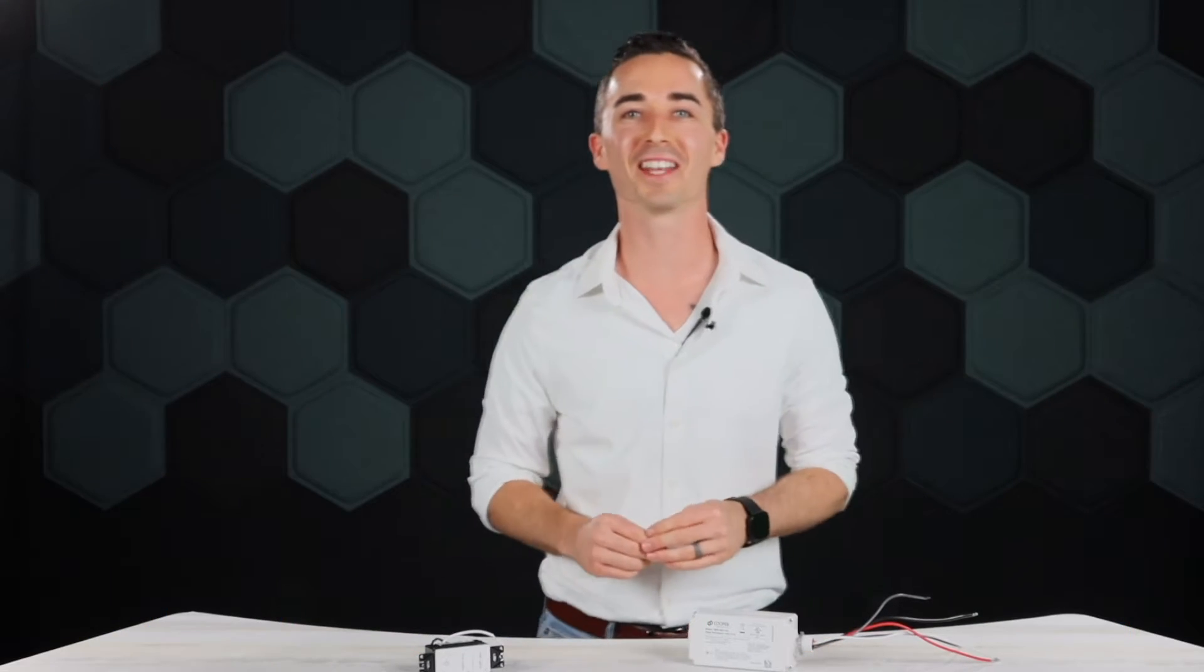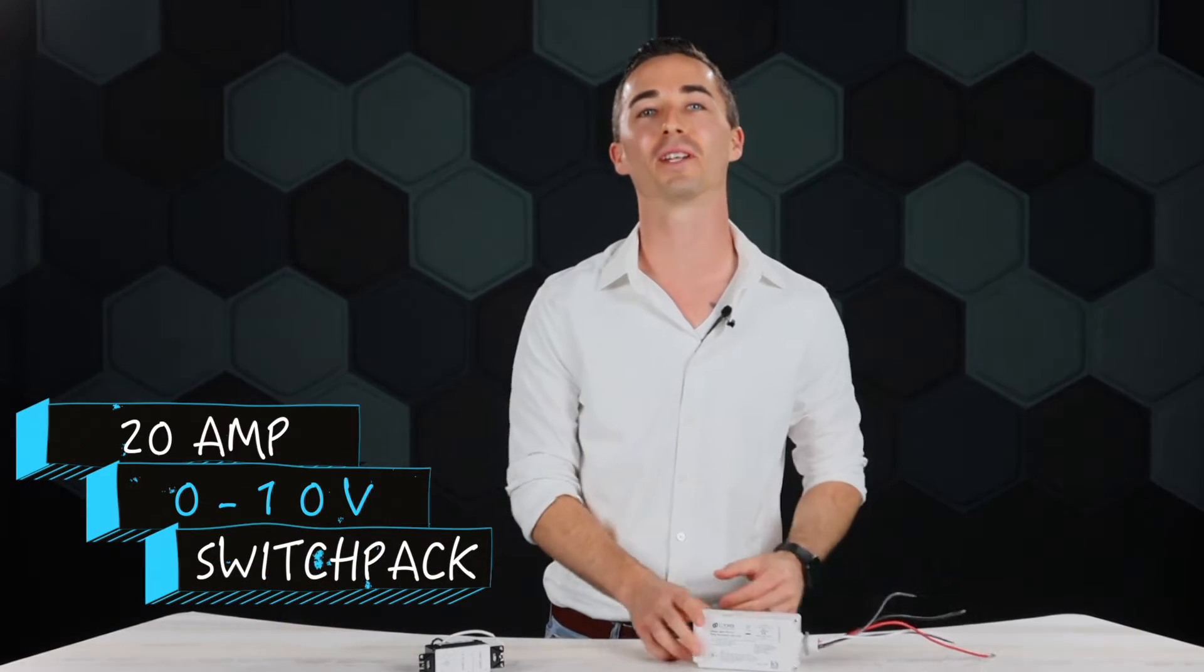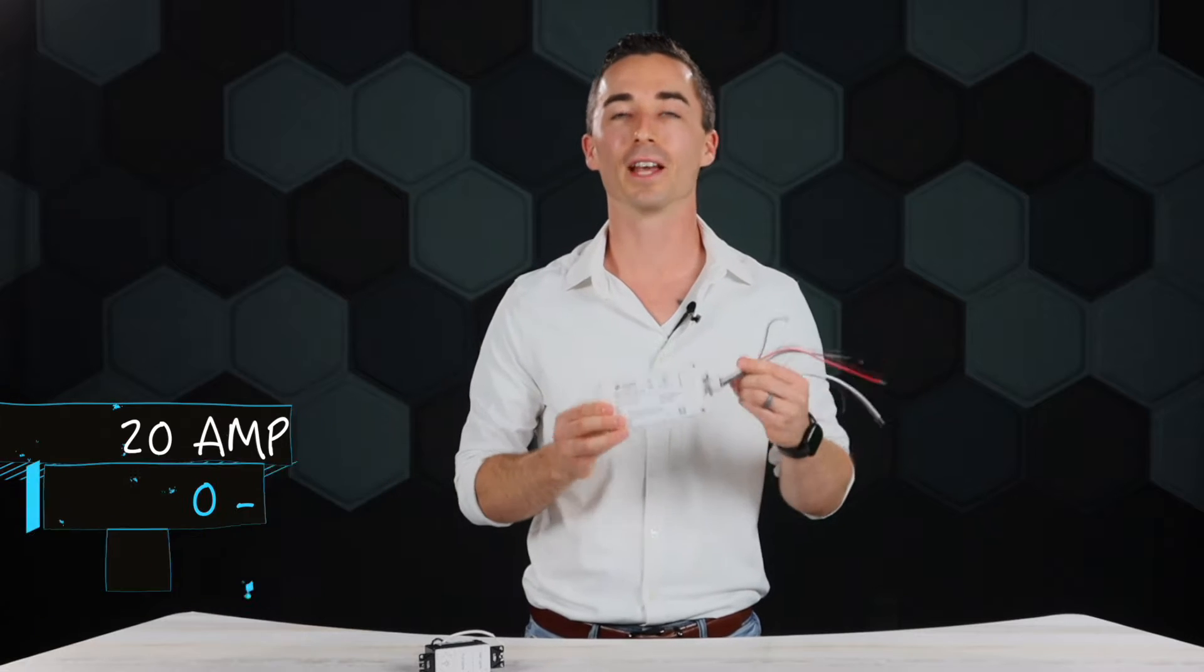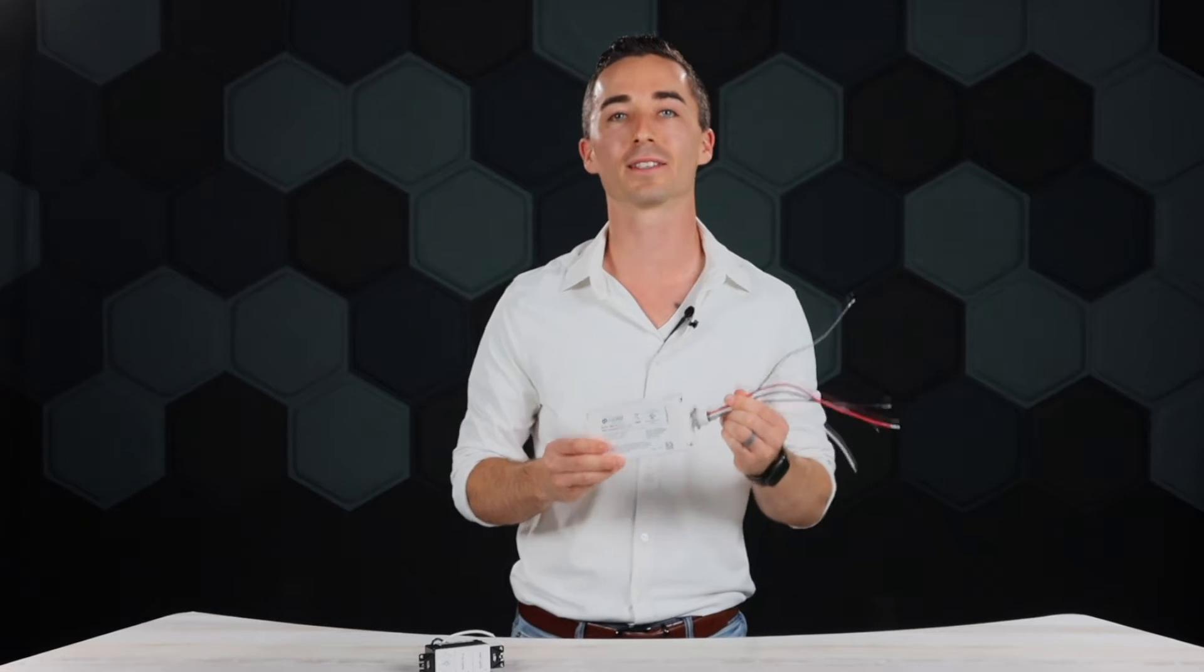So let's dive into our first product today. That is the 20 amp 0-10 volt dimming switch pack by Wavelinks. Now this product is one of my favorites because I don't have to send out a bunch of different types of power packs for a simple project. Most of our lighting these days is 0-10 volt dimming, especially in a TI project.